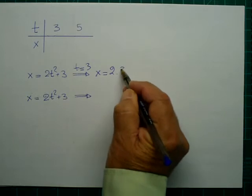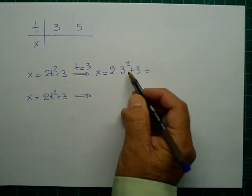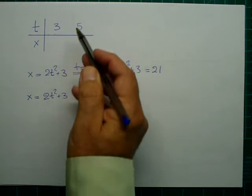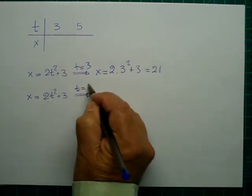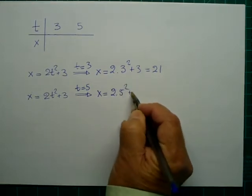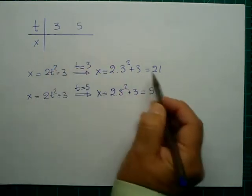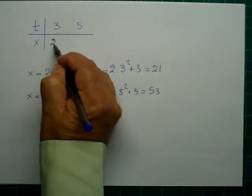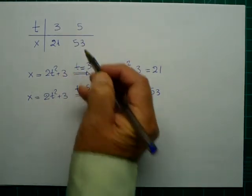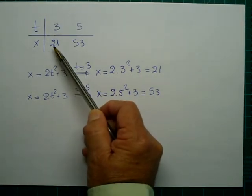And then I substitute t equals 5. x equals 2 times 5 squared plus 3, which is 53. So I write these down in the table. At the point t equals 3 we get x equals 21, and at t equals 5 we get x equals 53.